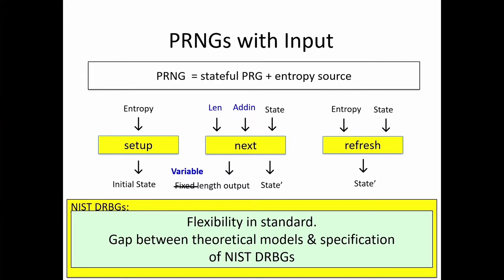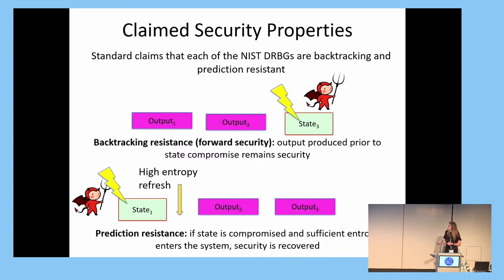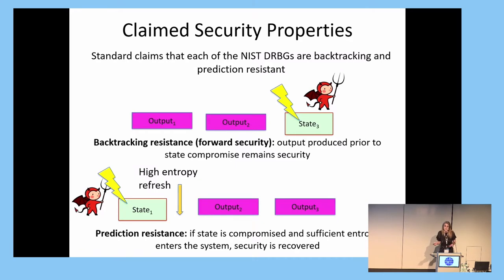We can see that there's a lot of flexibility in the way these generators are specified, and we could have two implementations of the same algorithm looking very different depending on how parameters are set. In terms of security properties, the standard claims that each of the generators achieves backtracking resistance and predictive resistance. Backtracking resistance says that if at some point the state is compromised, then output produced prior to the compromise remains secure and pseudo-random. This property is more commonly known as forward security, and I'll refer to it as this for the rest of the talk.